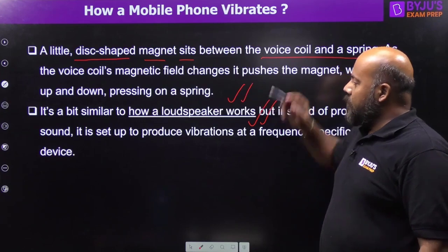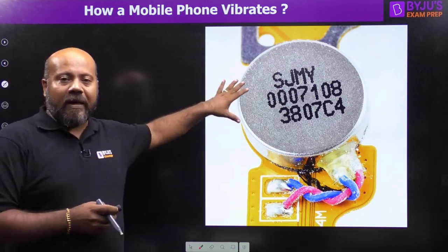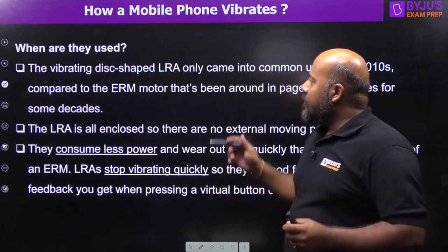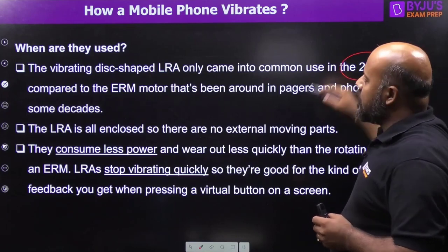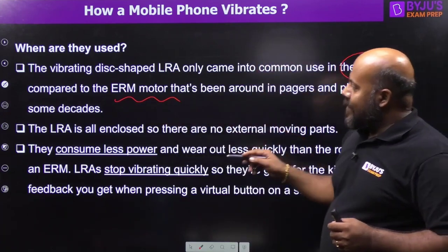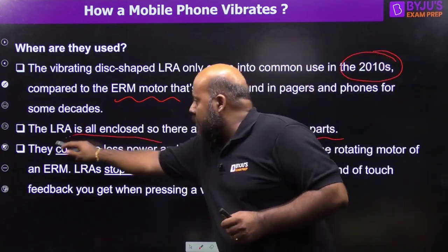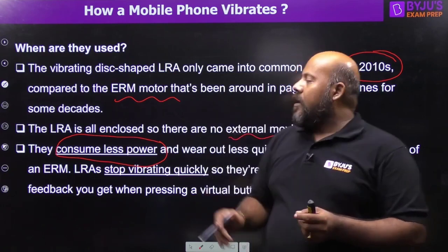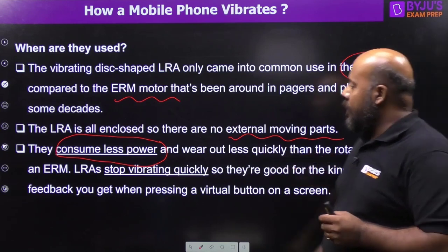Its working is similar to how your loudspeaker works — you can see the diagram. The vibrating disc-shaped linear resonance actuator only came into common use in the 2010s, compared to the ERM motor that has been around in pagers and phones for some decades. The LRA is fully enclosed with no external moving parts, consumes very less power, and wears out less quickly than the rotating motor of an ERM.